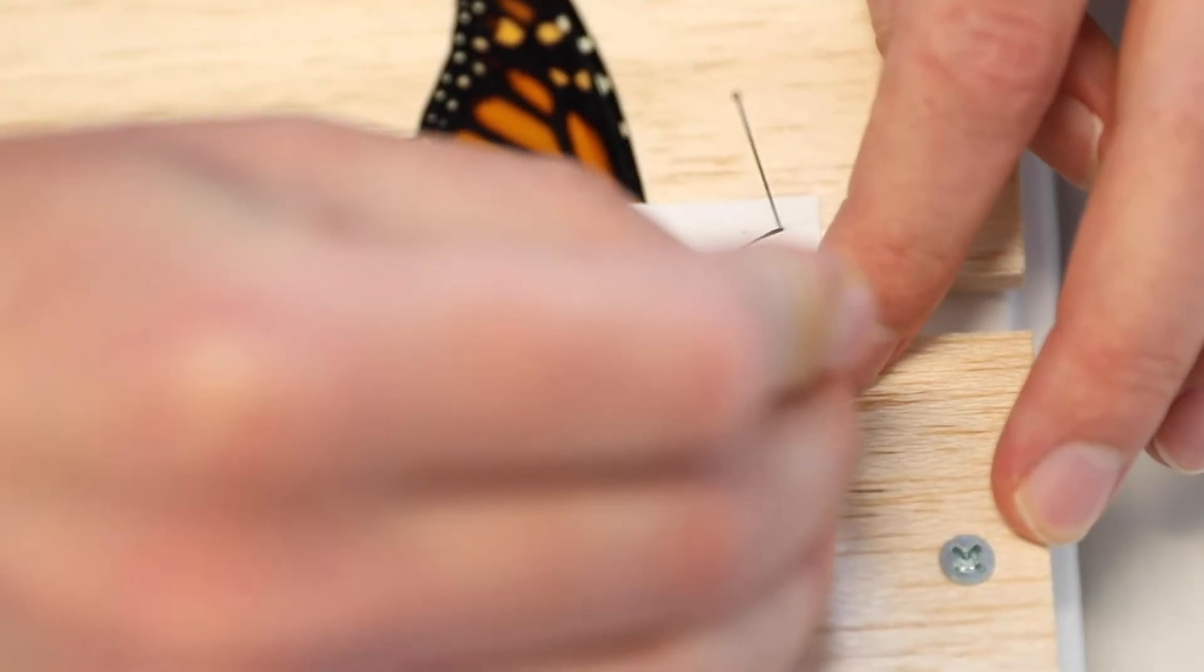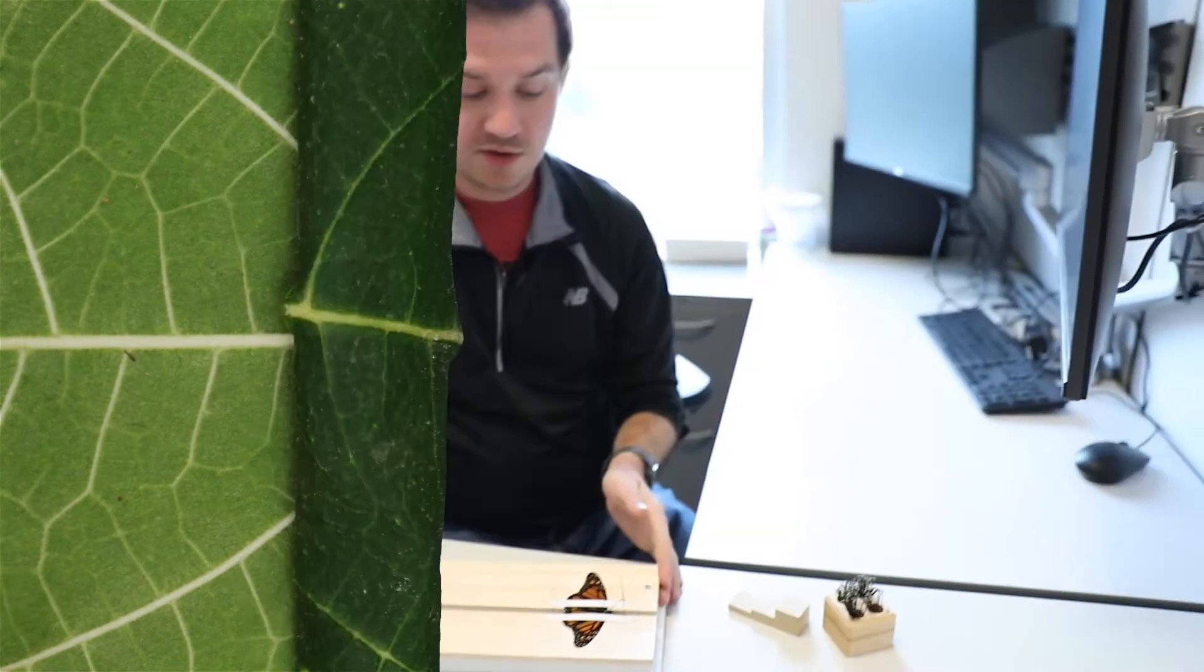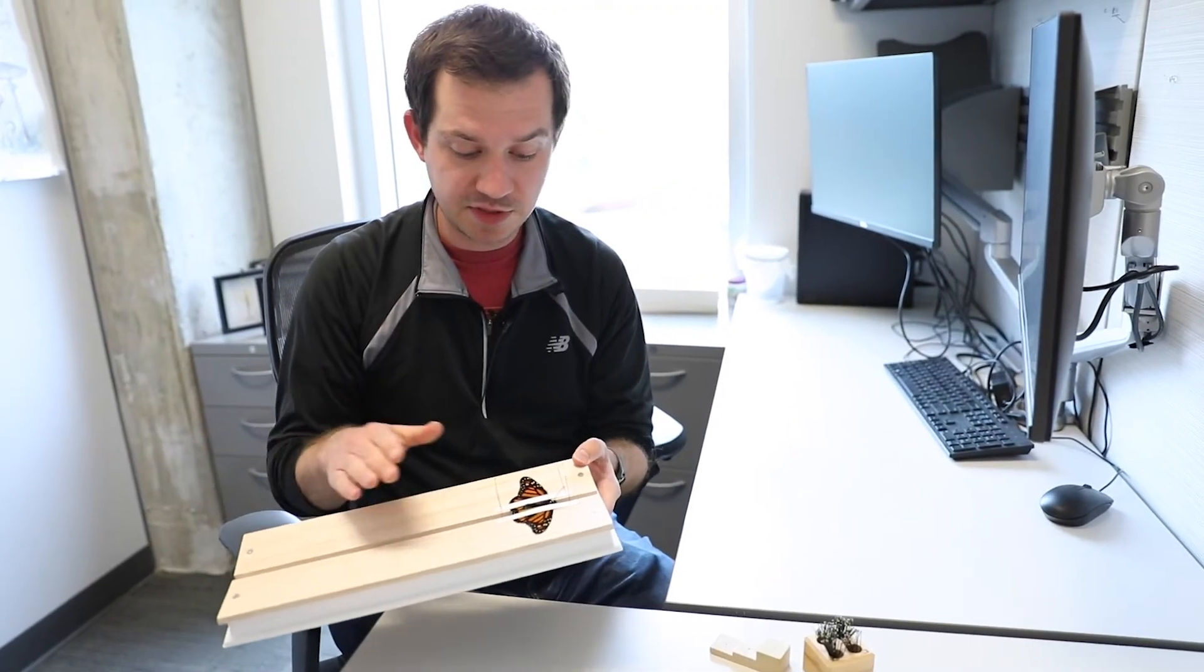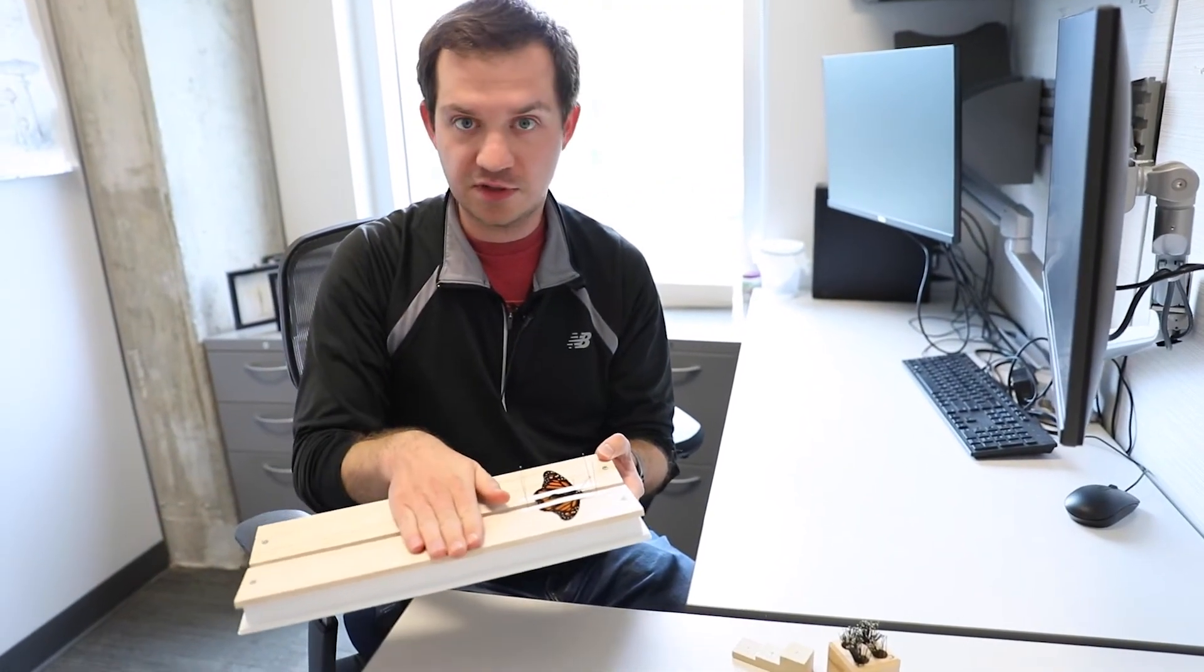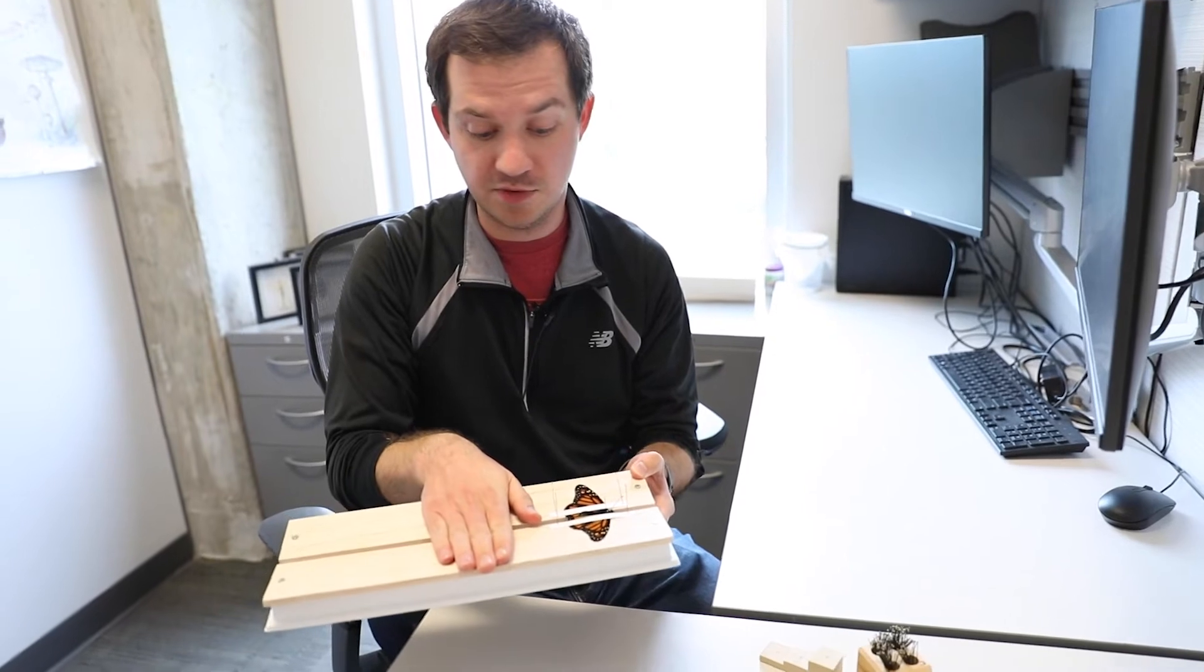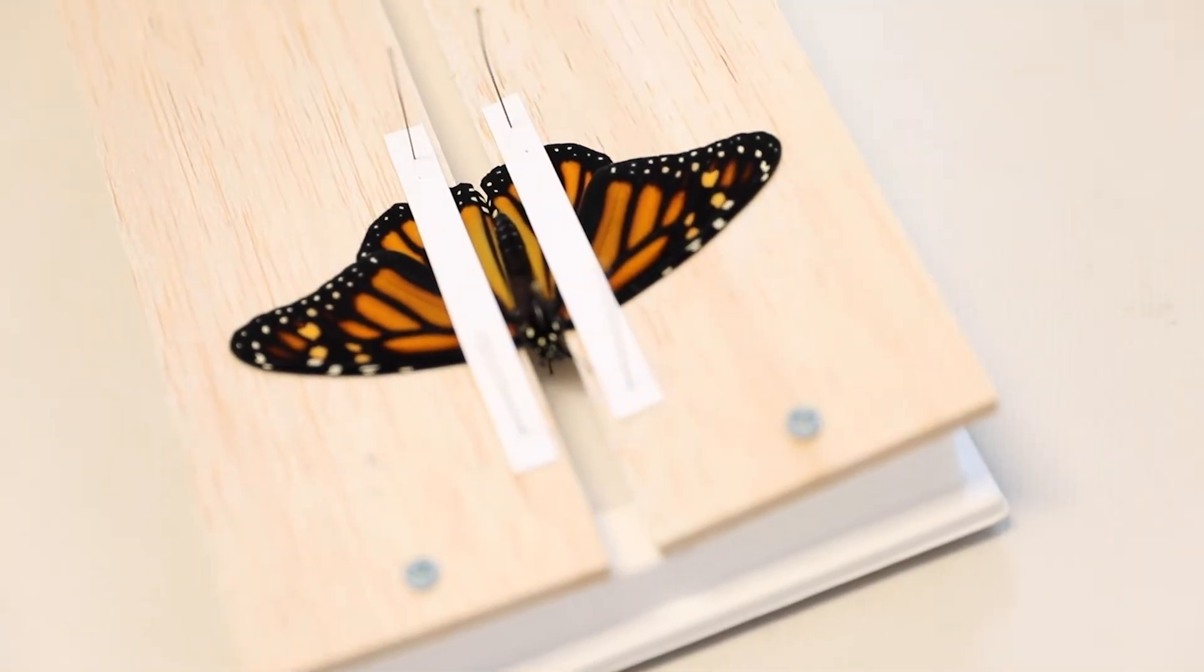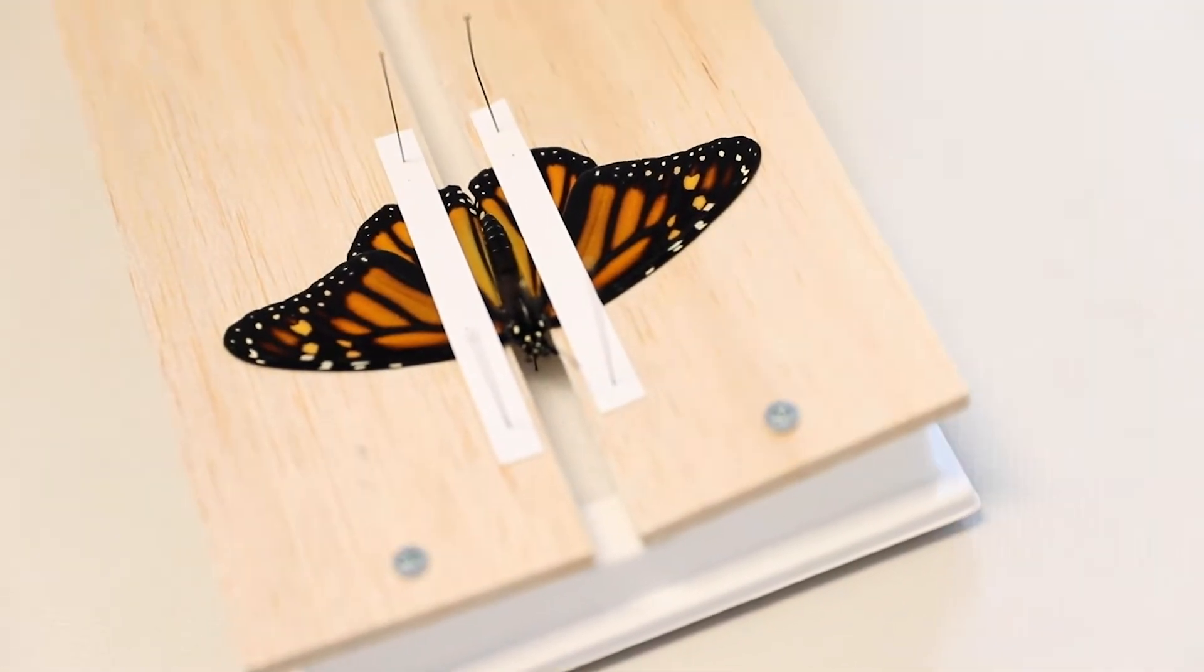I like to do the same exact thing to the other side. I'll take that piece of paper, take a pin, and just seal it in like that. Now our butterfly is on our spreading board, we have the pin at a decent depth, we have the wings perfectly flush with the top of the spreading board.